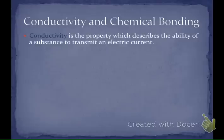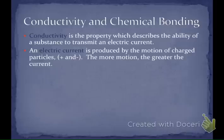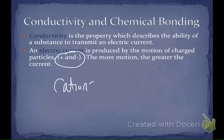Conductivity is a property which describes the ability of a substance to transmit an electric current. Electric current is produced by the motion of charged particles — positives and negatives. The more motion you have, the greater the current is going to be, and we're going to see that in lab tomorrow. What happens to the amount of conductivity as you add more charged particles? These charged particles can be cations if they're positive, anions if they're negative, or they could be electrons.